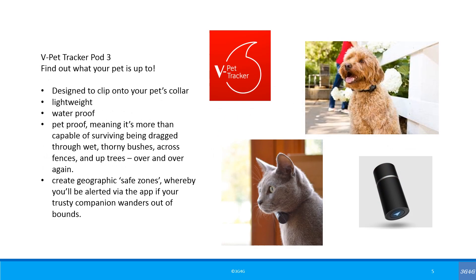One more example is the pet tracker. Vodafone has developed the vPet Tracker Pod 3, a lightweight device that can attach to the collar of your pet. You can then monitor the activity and geographic location of your pet via your smartphone to ensure their safety and well-being.